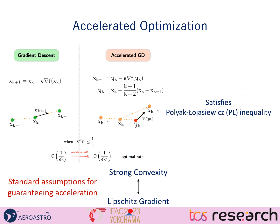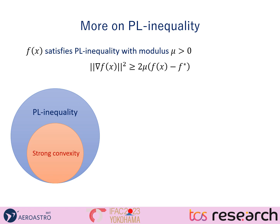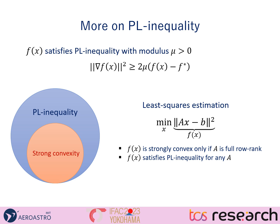The PL inequality is a relaxation of strong convexity: every strongly convex function also satisfies the PL inequality, but there are functions that satisfy PL inequality without being strongly convex. We define PL inequality satisfaction as: if the gradient and the function itself have a particular relation for some modulus mu, then the function satisfies PL inequality. As an example, for the least squares problem where f(x) = ||Ax - b||², if A is full rank, the function is strongly convex. But for any arbitrary matrix A, whether full rank or not, this function always satisfies the PL inequality.